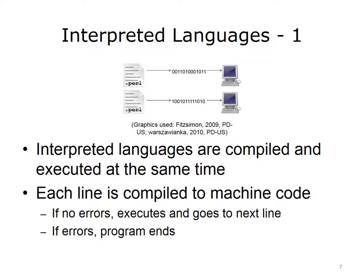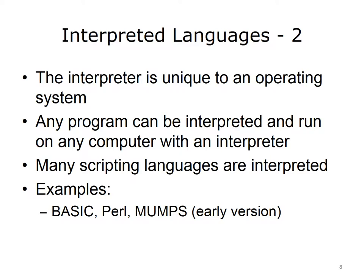The trade-off is that interpreted languages can be faster to develop, since the entire application doesn't need to be compiled before running it. During the development stage, program versions are changed frequently, which can result in a lot of compilation time, particularly for a large application. The interpreter for the language is unique to an operating system, but once the interpreter is installed, it can handle any program written in the corresponding language. In other words, users can port — which means to move or copy over — a program written in an interpreted language to any computer, assuming the computer has the interpreter installed. Many scripting languages are interpreted, making programs written in them portable.